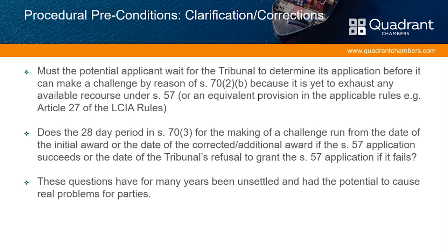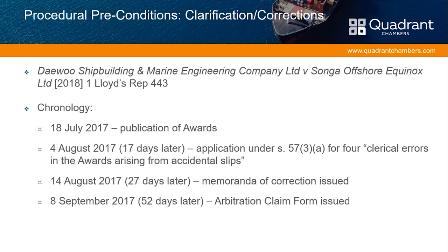The question arises whether the potential applicant waits for the tribunal to determine its section 57 application before making a challenge — since by subsection 2(b) it has yet to exhaust available recourse under section 57. Article 27 of the LCIA rules, which provides in similar terms for a slip rule, is treated in the same way as section 57. The question is whether the 28-day period runs from the date of the initial award, the date of the corrected or additional award if the section 57 application succeeds, or the date of the tribunal's refusal to grant the section 57 application if it fails. These questions had for many years been unsettled and had the potential to cause real problems for the parties.